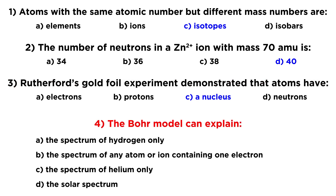And then for four, the Bohr model can explain — this is going to be B — the spectrum of any atom or ion containing one electron. So it does work for hydrogen, but it also works for any other atom that has only one electron. It works for helium if it's helium plus, for lithium if it's lithium 2 plus, for beryllium if it's beryllium 3 plus, et cetera. The limiting factor is that it can only have one electron; beyond that the math gets very complicated. But given that there can be multiple species with one electron, B is going to be our answer.